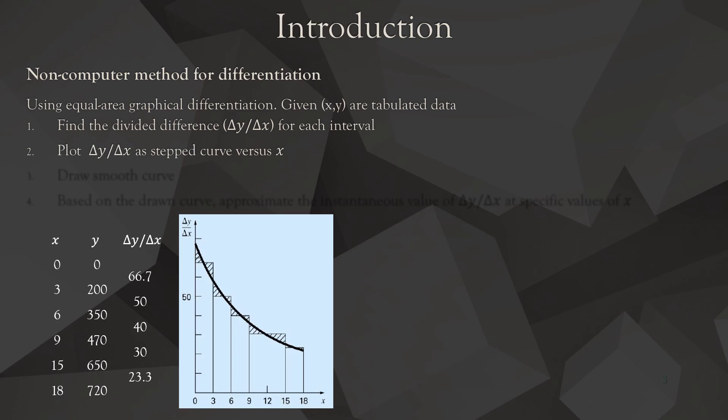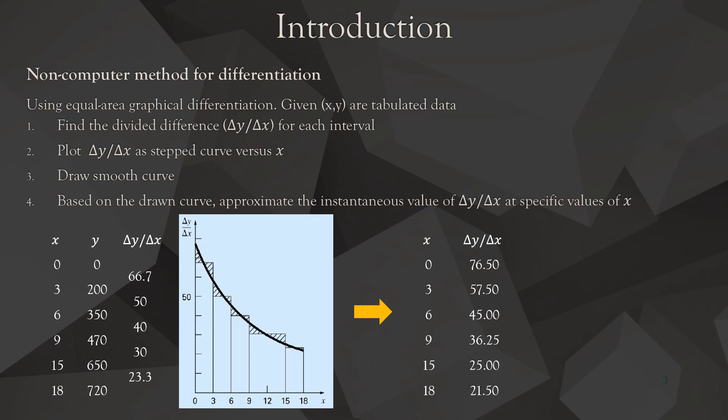We then plot delta y over delta x as a step curve versus x, and draw a smooth curve that intersects the midpoint of each step. Based on this drawn curve, we approximate the instantaneous value of delta y over delta x at specific values of x. That instantaneous value can be considered as the first derivative at that specific point.